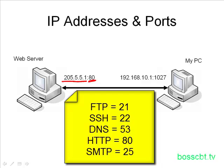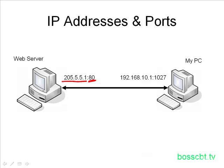When the web server returns traffic to me, I've included a source port when I contacted it, and it knows my source address. So when it sends information back, not only does it send it to my IP address, but it includes the port I used to contact it initially. That way, when I receive information back from the web server, I can distinguish it — I know what program on my PC is interested in that information.